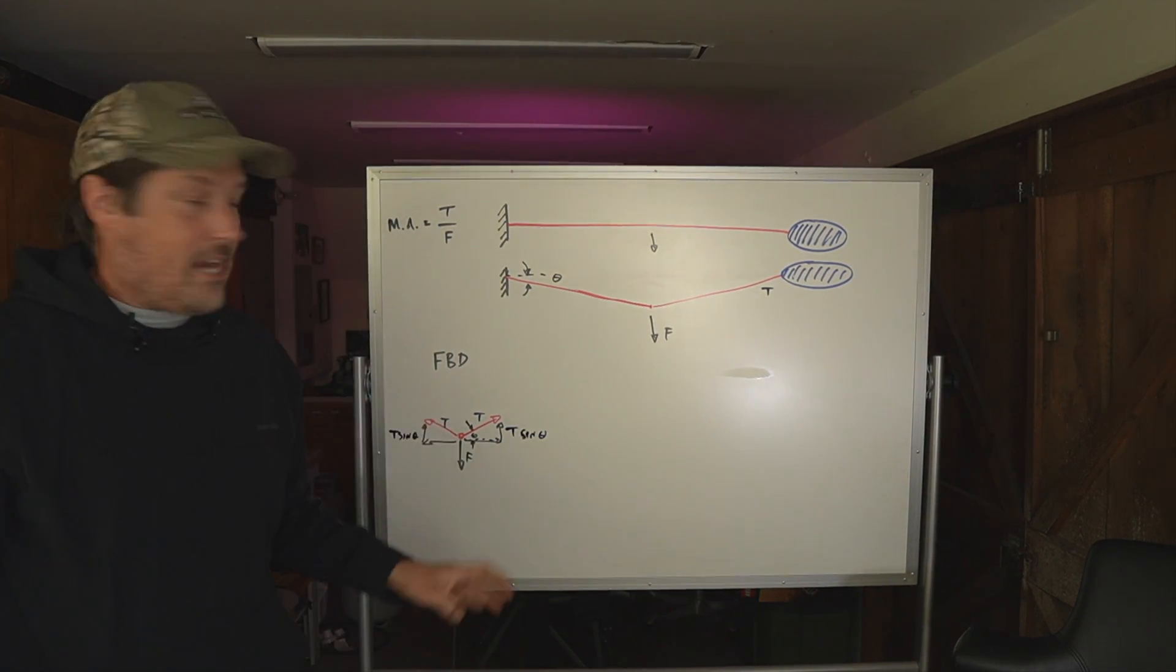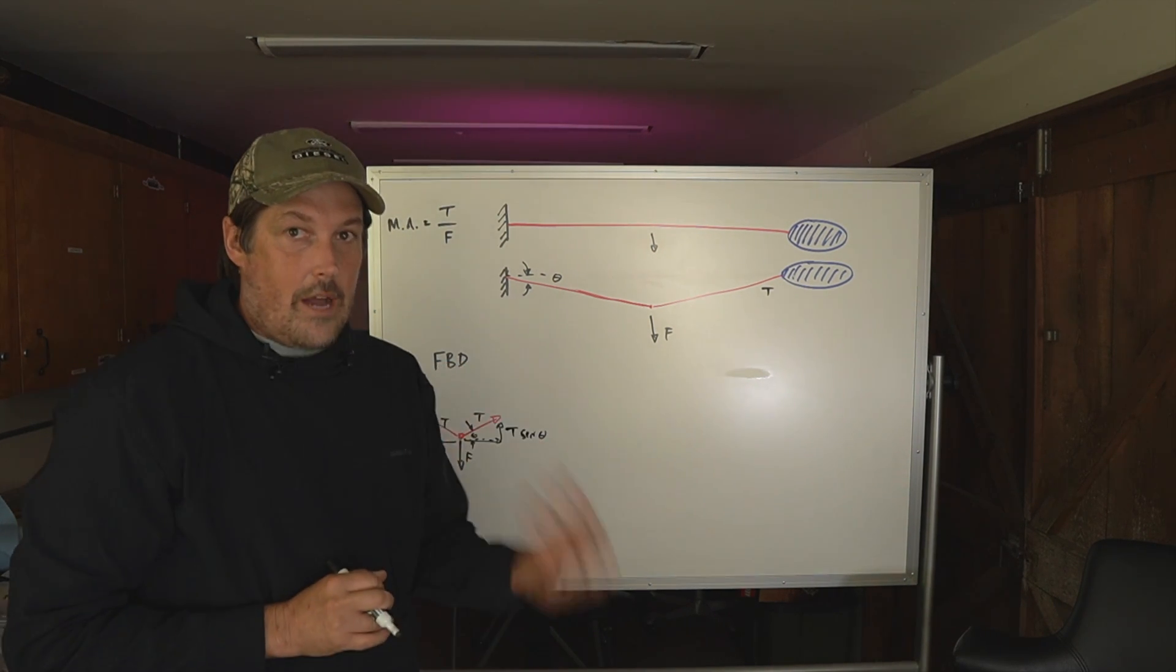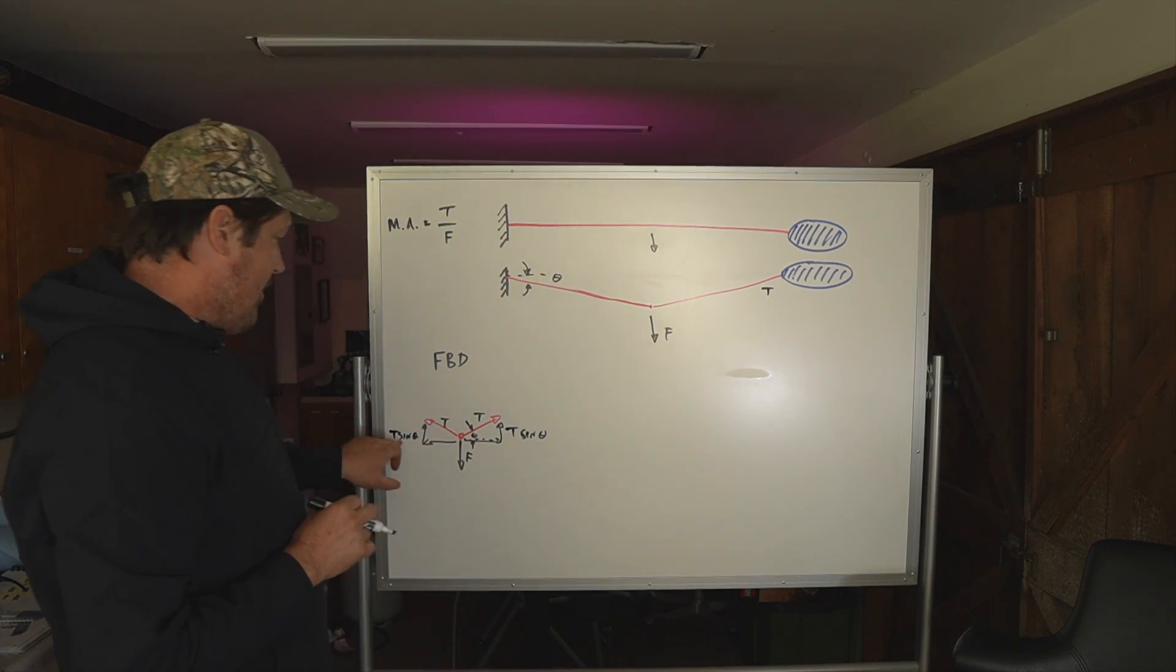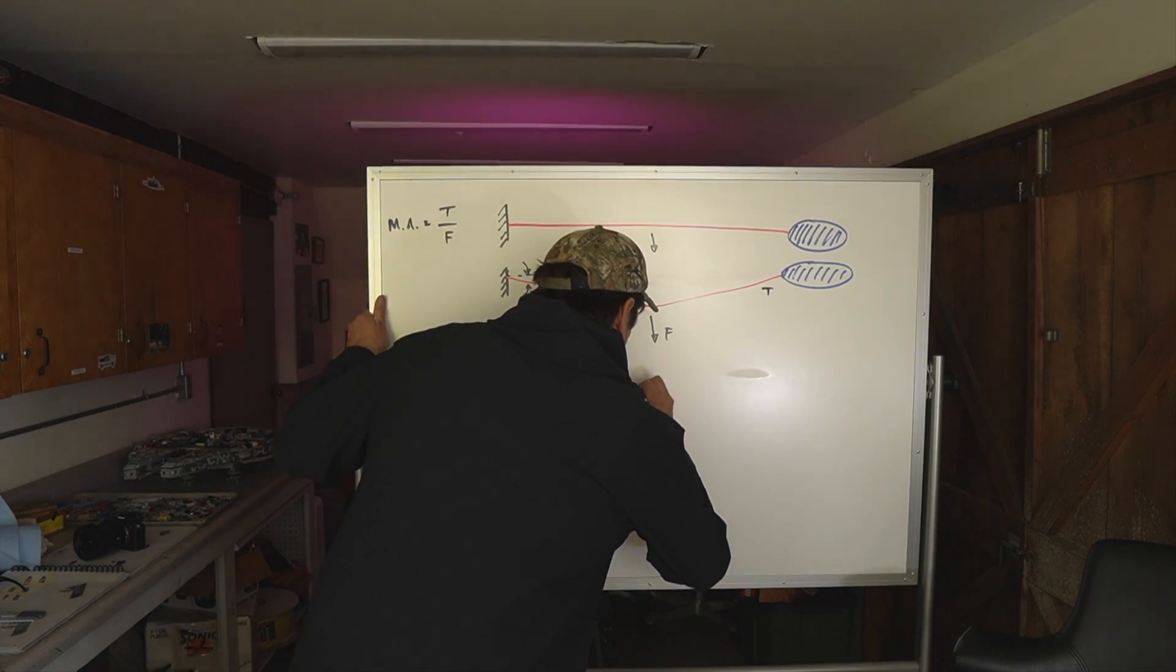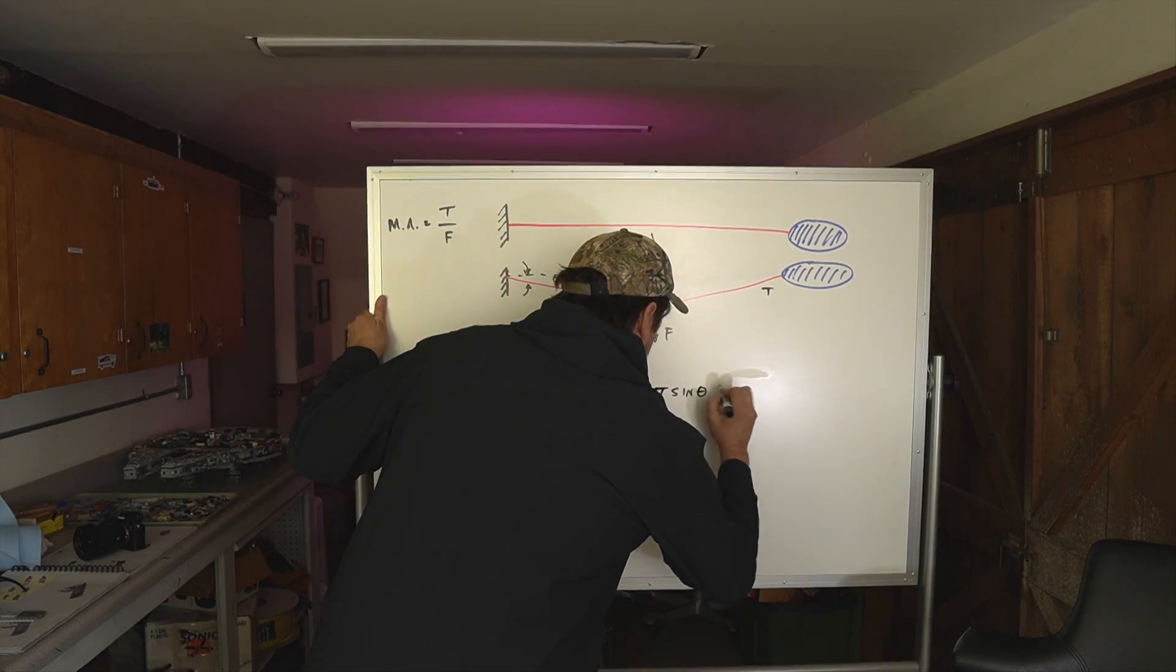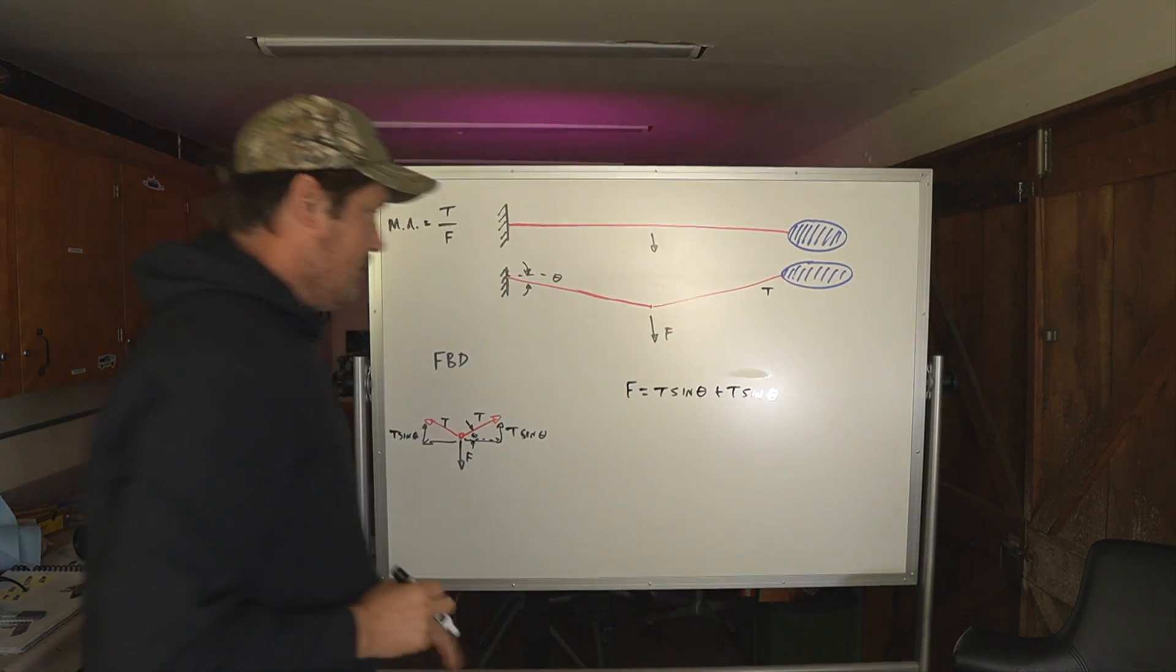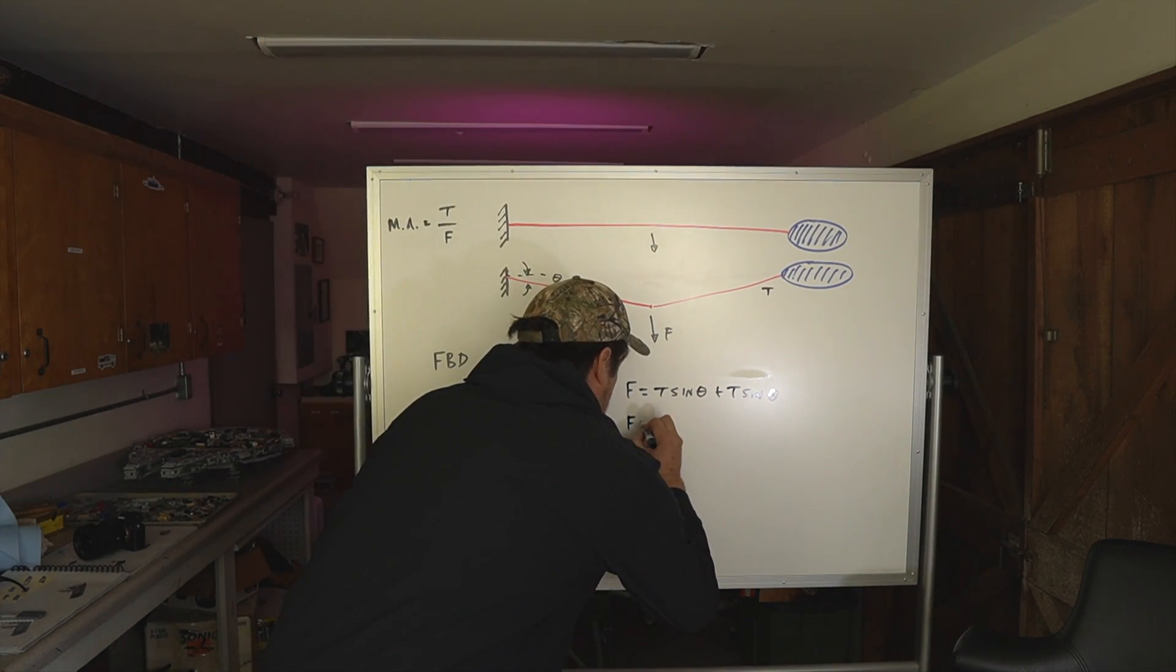Now you may have no idea what I'm talking about, which is great. But if you do follow along, we're going to sum the forces in the Y direction. So this force is counteracted by this force and this force. So this force, F, equals T sine theta plus T sine theta. That's from our free body diagram, which says that force is basically 2T sine theta.